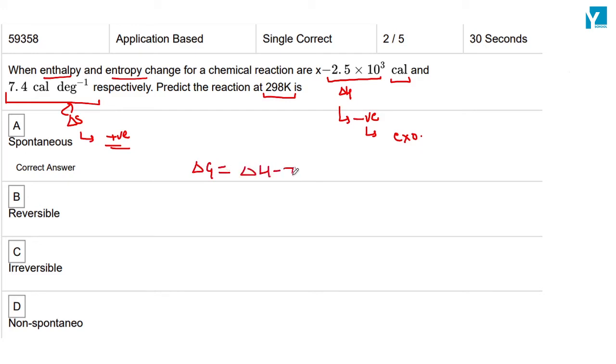Delta G equals delta H minus T delta S. Delta H is negative, delta S is positive, so both terms contribute to making overall delta G negative, which indicates that the process is spontaneous. So the answer is spontaneous, which is correct.